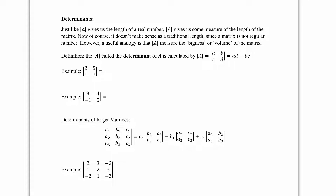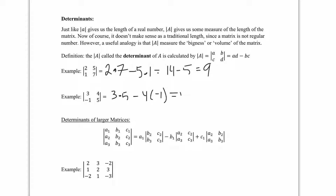To find the determinant of a 2x2 matrix, multiply the two corner entries A and D, then subtract the product of the other two corners B and C. For example, 2 times 7 minus 5 times 1 gives 14 minus 5, which is 9. For the second example, 3 times 5 minus 4 times negative 1 gives 15 plus 4, so 19.